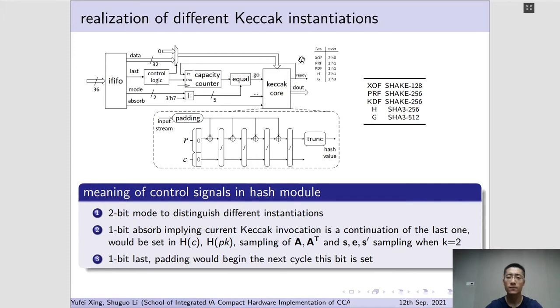The 2-bit mode signal determines the number of 32-bit zero data chunks appended. For XOF function, mode signal is 0, it is concatenated with 3-bit 7, determining the end of capacity counter is 7. For PRF function, mode is 1, it is concatenated with 3-bit 7, determining the end of capacity counter is 15. The appending process would begin.